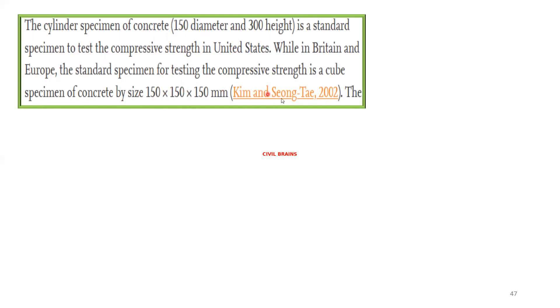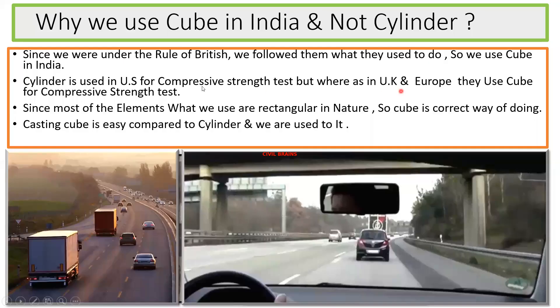This is a reference paper given by those two authors. So the first point is clear: the cylinder is used in the US for the compressive test, whereas in the UK they use the cube for the compressive strength test.